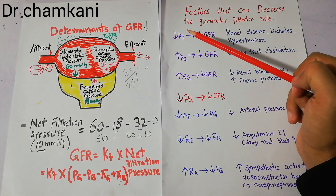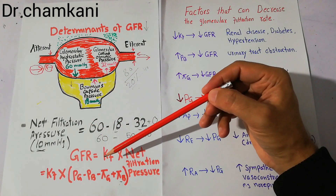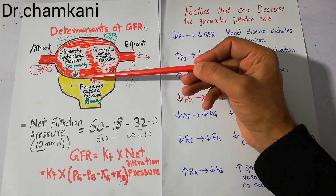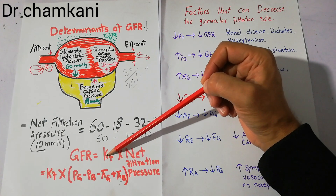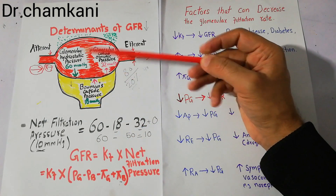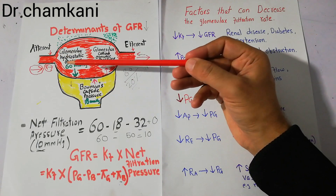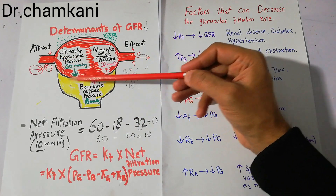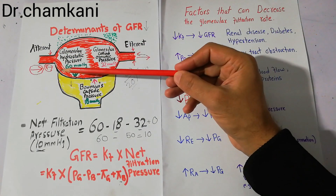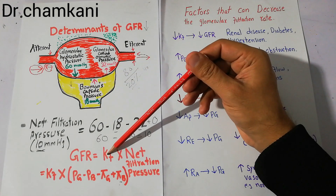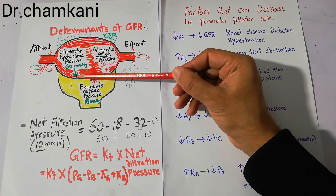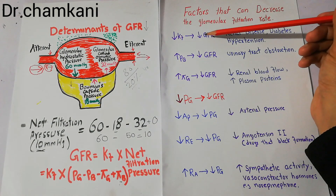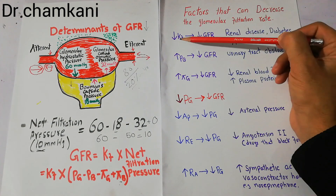The first factor we are going to discuss is a decrease in Kf — the glomerular capillary coefficient. Kf is basically dependent upon the permeability of the glomerular capillaries and their surface area. If the surface area of the capillary is large and the permeability of the capillary wall is normal, then Kf will be normal. But if there is a decrease in the permeability of the capillary wall or a decrease in the surface area, it will definitely decrease the GFR.